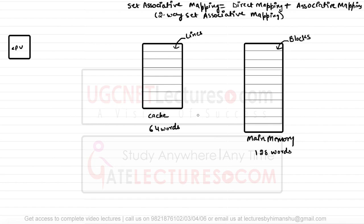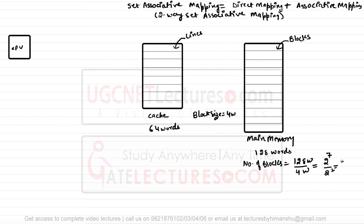The line size and block size are equal to four words. How many blocks will be there in the main memory? The number of blocks in the main memory will be 128 words divided by 4 words, which is 2 raised to power 7 divided by 2 raised to power 2, or 2 raised to power 5 blocks, which equals 32 blocks. So there are block numbers 0 through 31, totaling 32 blocks.